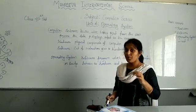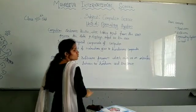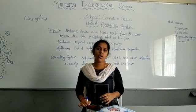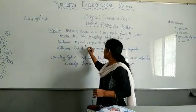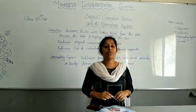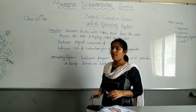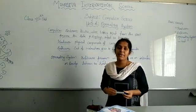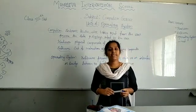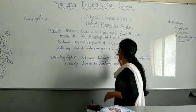A computer is a machine. We have divided our computer components in two ways: they are hardware and software. What do you mean by hardware? You might already know. Hardware are the physical components of the computer — the components that we can touch and feel are called hardware.